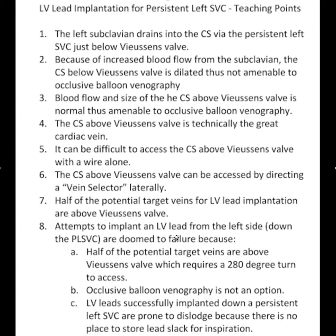Attempts to implant an LV lead from the left side down the persistent left SVC are doomed to failure because: number one, half of the potential target veins are above Eustachian valve, which requires a 280-degree turn to access; occlusive balloon venography is not an option; and most importantly, LV leads successfully implanted down a persistent left SVC are prone to dislodge because there is no place to store the slack for patient inspiration. Hope you find this video useful.